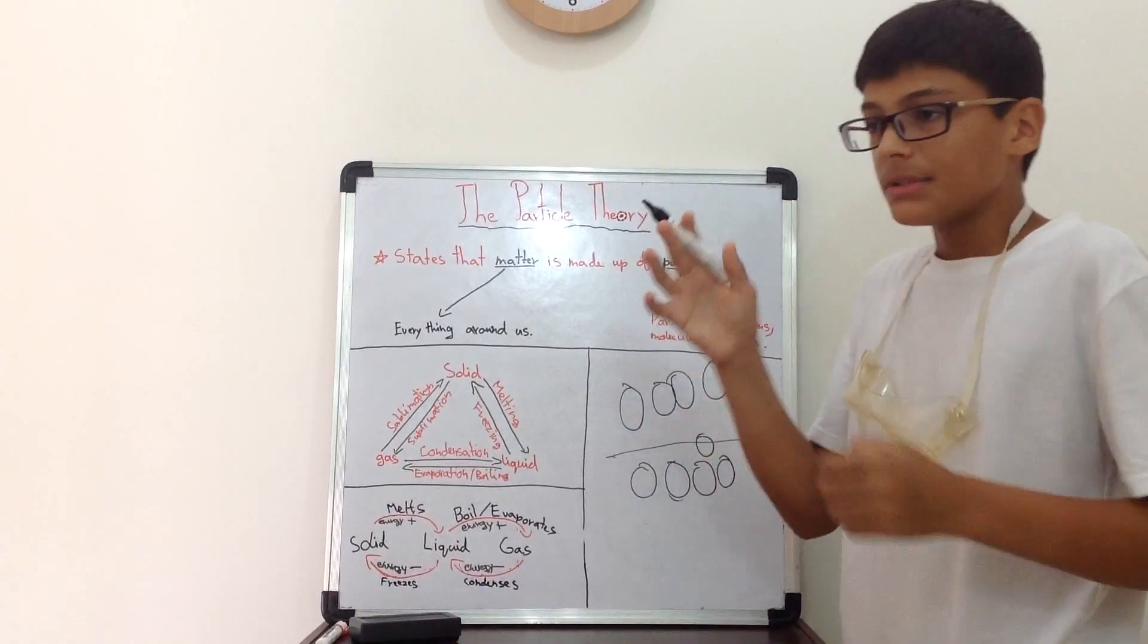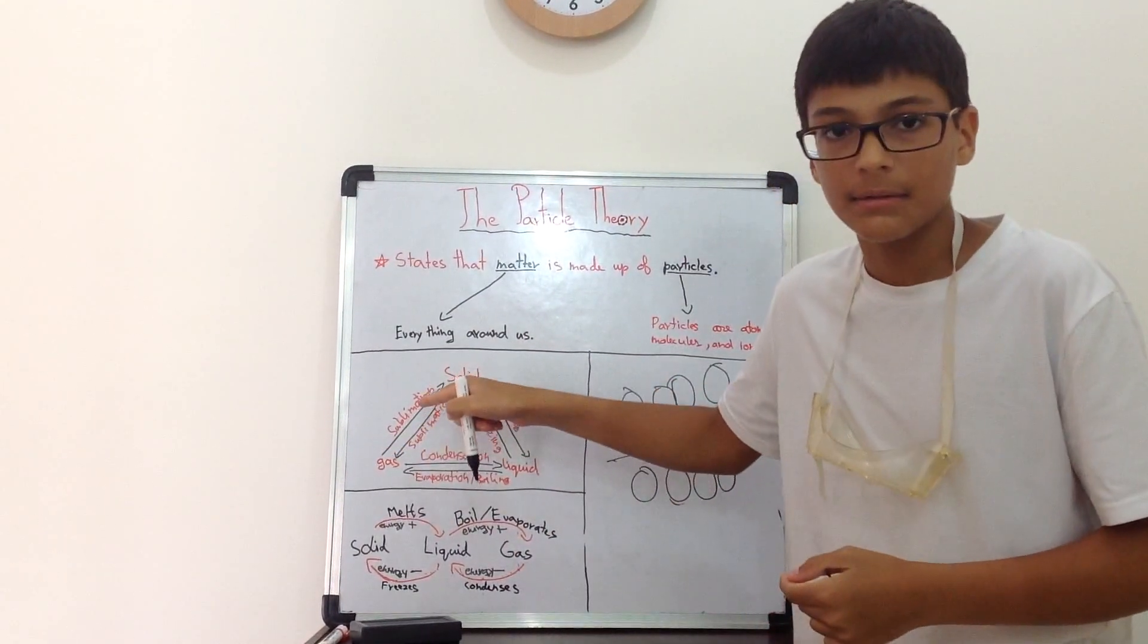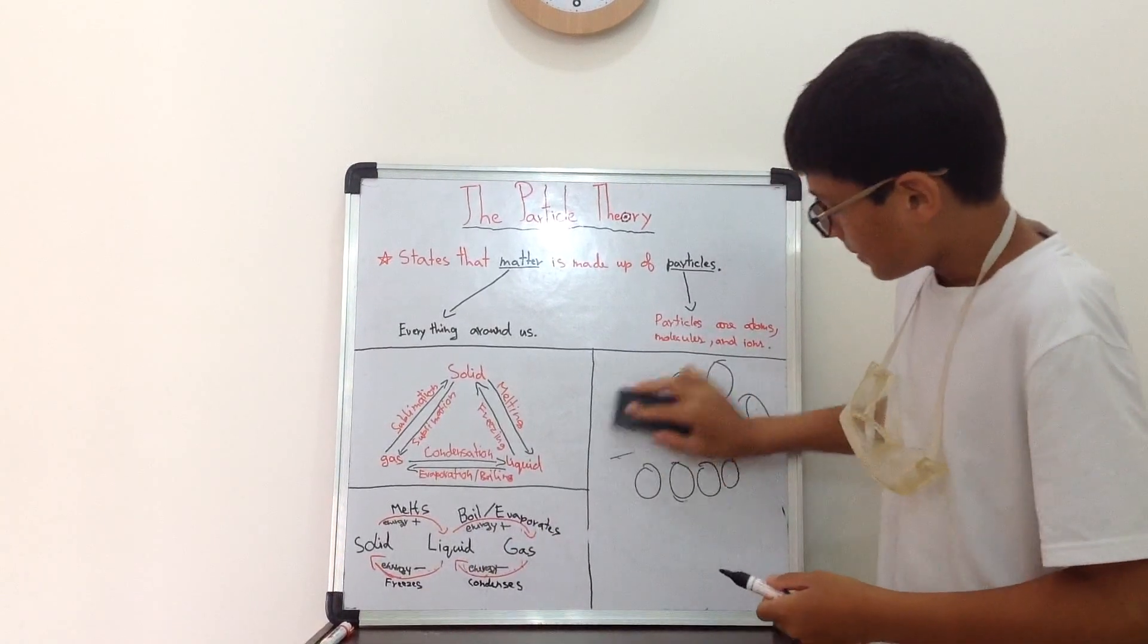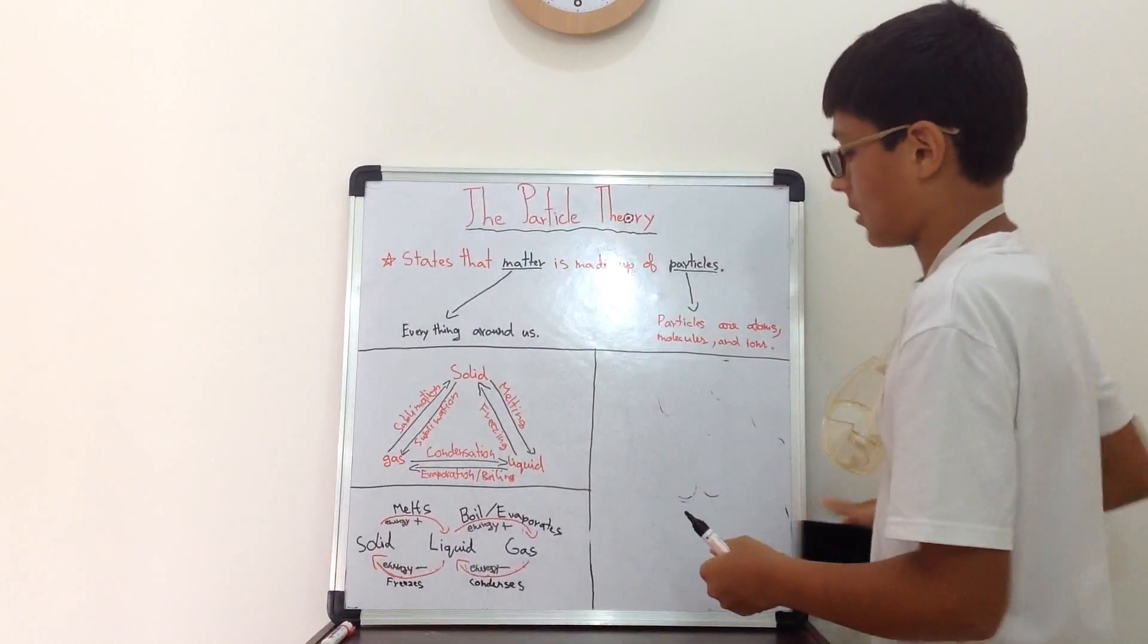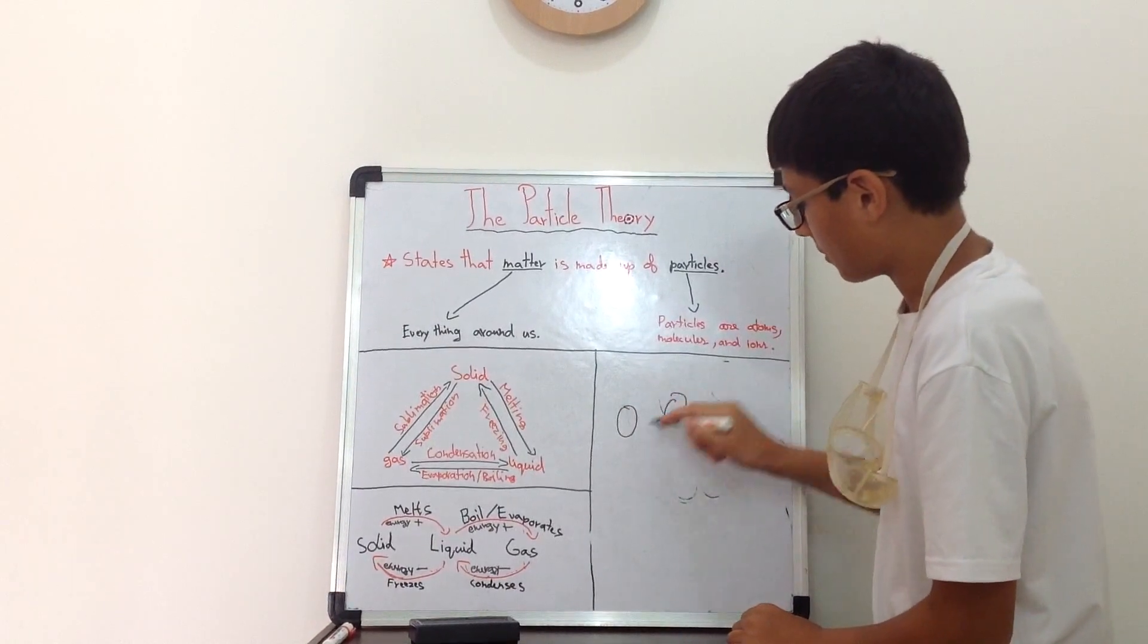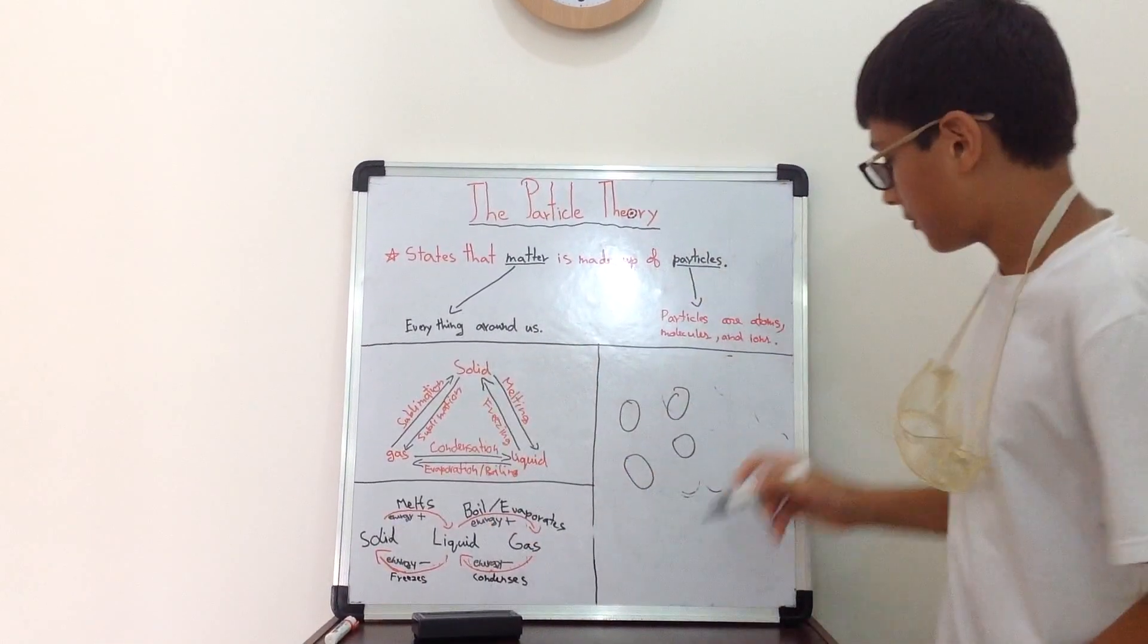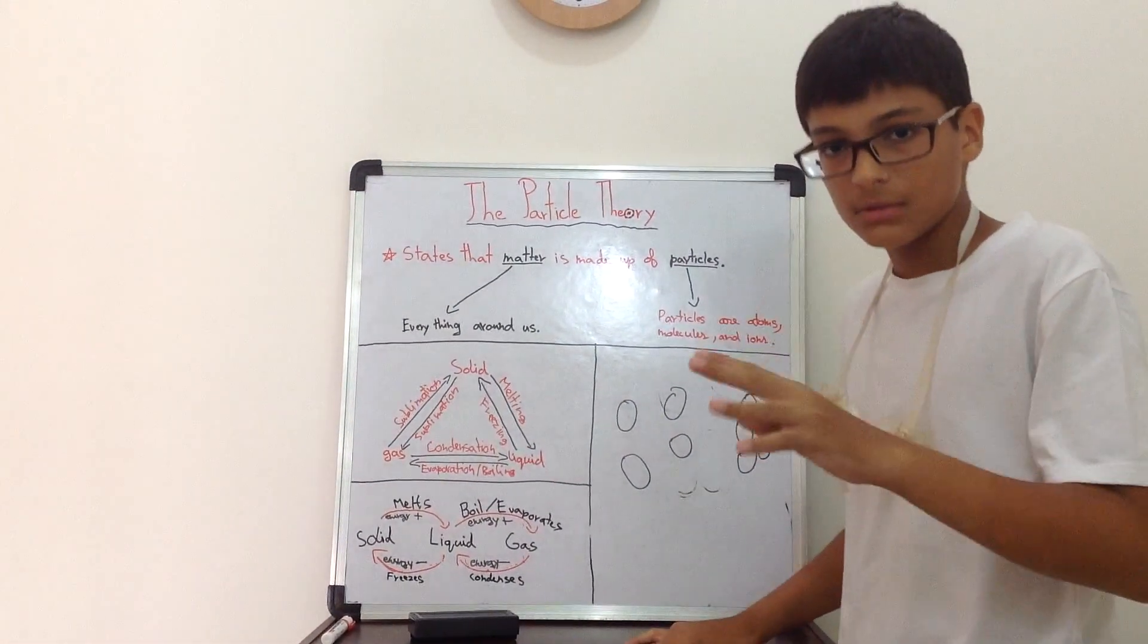And then, now let's discuss sublimation. Sublimation is when a gas turns into a solid directly without liquid being between the process. Now how that happens is that the particles in a gas are moving all around. They lose their energy so quickly that they immediately turn into a solid where only vibration can occur. So they cool down that quickly.